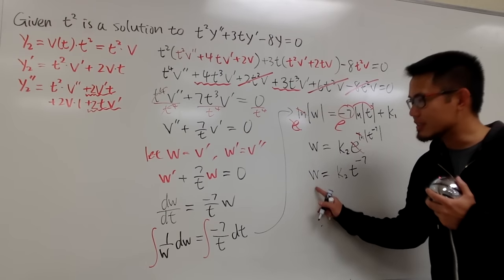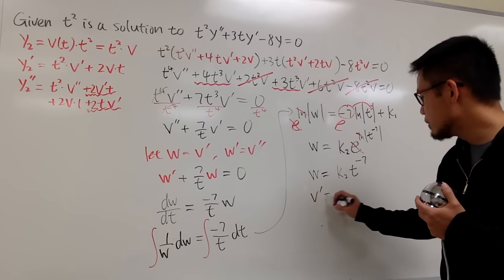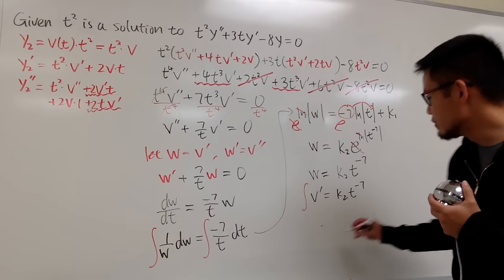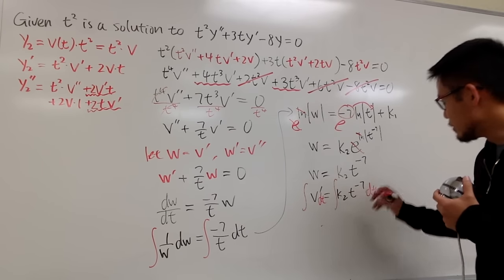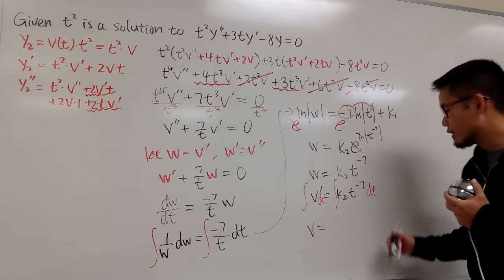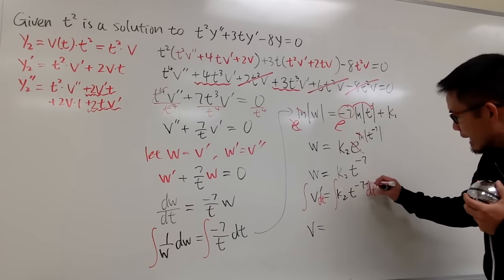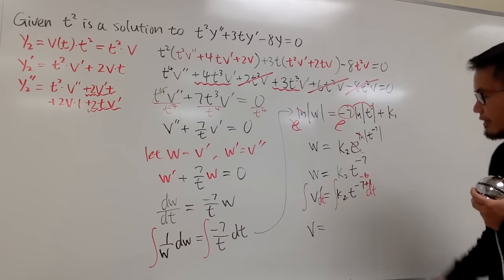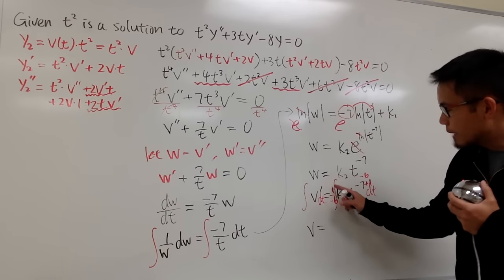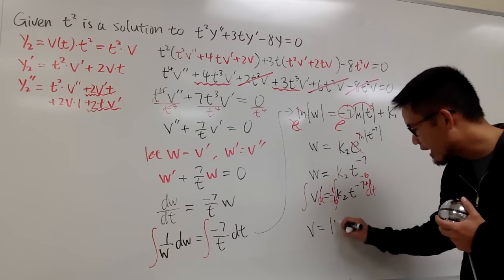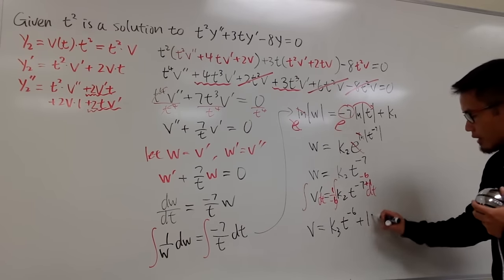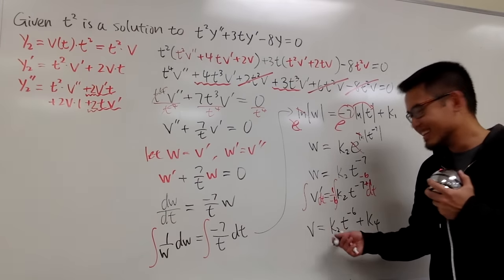Now, w is the same as φ prime, so φ prime equals k₂·t to the negative 7. Integrating with respect to t: on the left we get φ, and on the right, using the power rule, negative 7 plus 1 equals negative 6, so we get k₂ divided by negative 6 times t to the negative 6, which is another constant k₃. Adding the integration constant k₄, we have φ equals k₃·t to the negative 6 plus k₄.